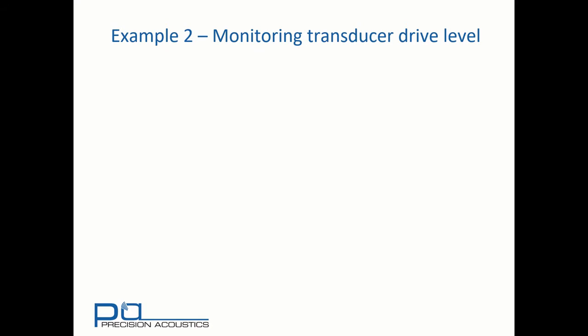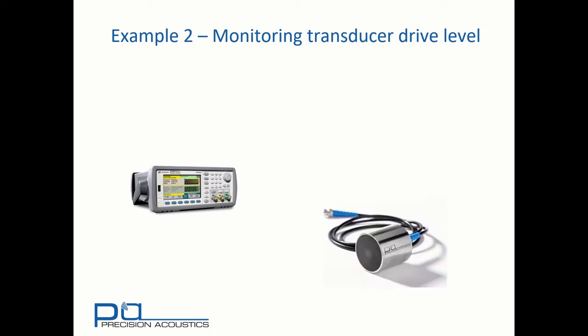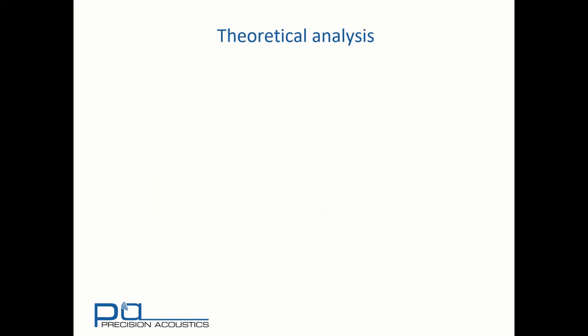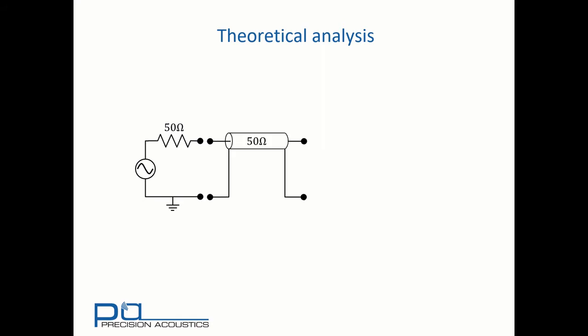Now let's look at another example where we'd like to monitor the transducer drive level. In this case, we have our same function generator, this time with a transducer, and you can see the 50 ohm BNC cable is configured to it. We also have an oscilloscope, and it would be logical to assume that we can simply put a T-piece connecting to the transducer and another cable connecting to the oscilloscope. But let's look carefully at the equivalent circuit for this. We have a function generator with a 50 ohm source that connects via a 50 ohm cable to a transducer — a nicely loaded system. However,